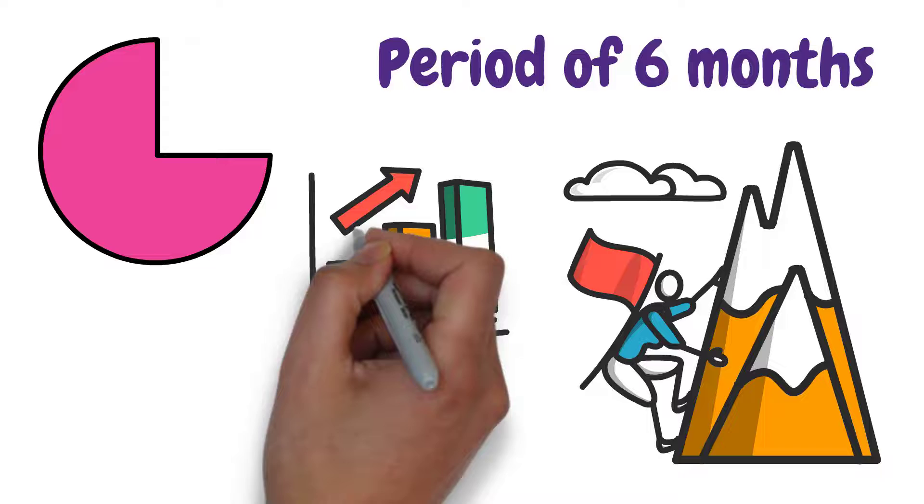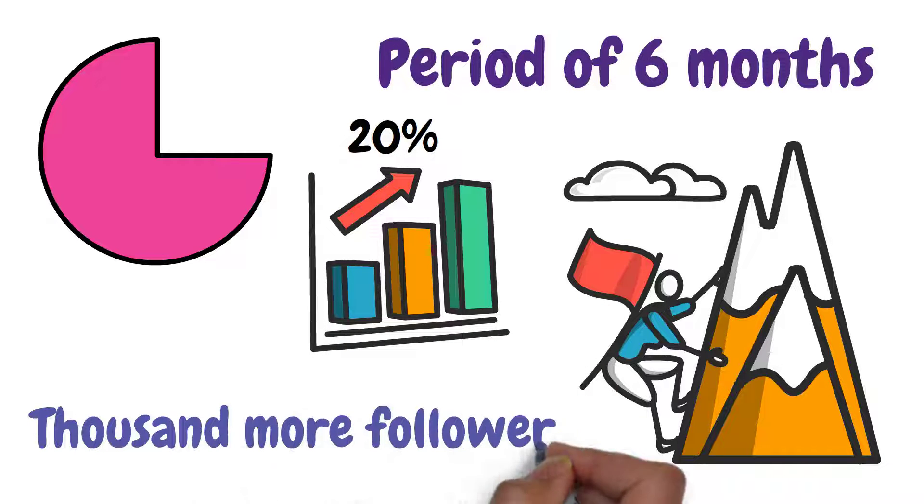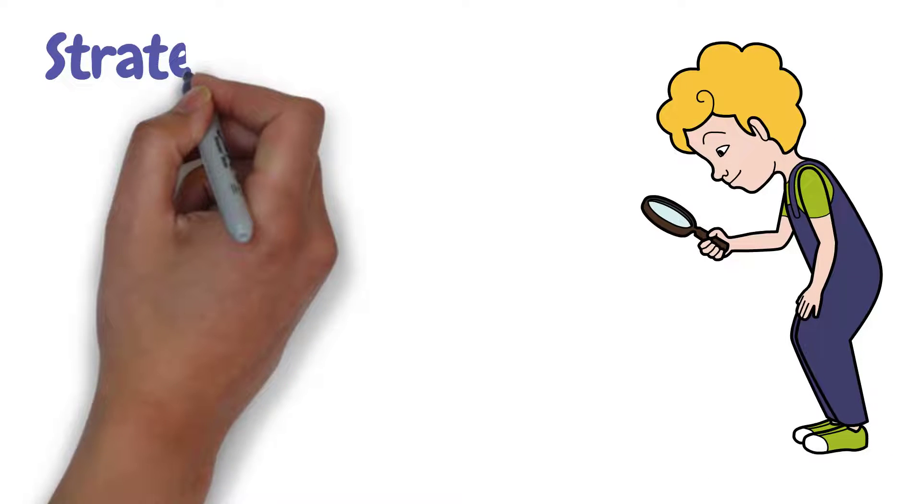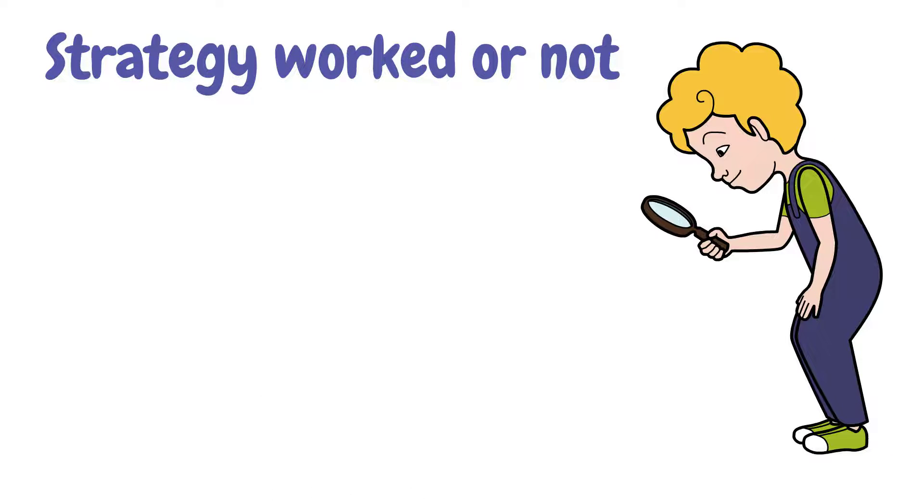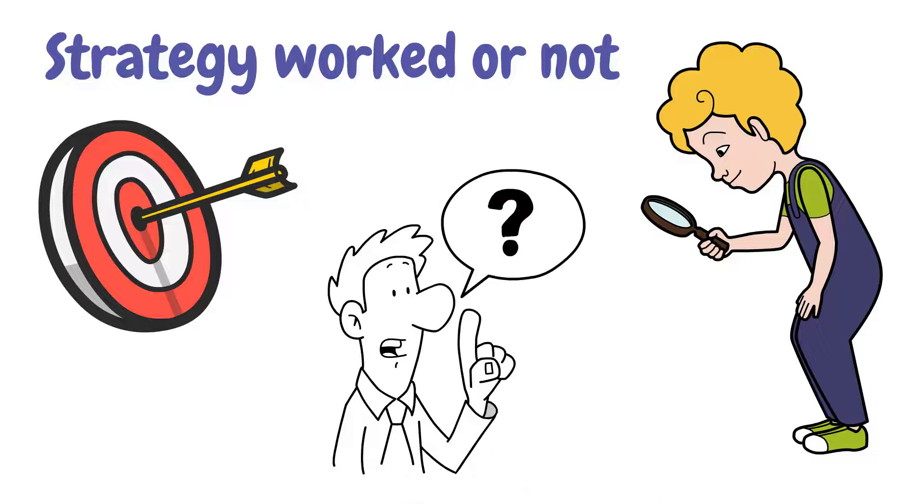An example can be to increase sales by 20% or by gaining a thousand more followers on social media. Such goals will help you determine if your strategy worked or not in the end. And once you do set your goal, you will be able to determine how to plan your marketing strategy.